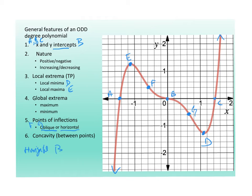Polynomials are not always symmetrical. Concavity is described between points: concave down between A and F, concave down between F and G, and concave up between F and B, and between G and C.